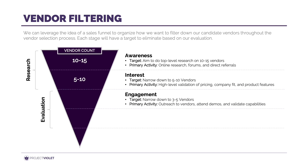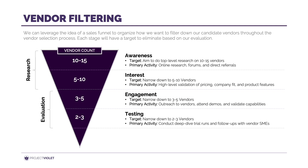From there, engage their sales teams, conduct the demos, and hopefully narrow down to 2 to 3 vendors where you can do some extensive testing in their trial run systems and then make your selection and purchase. These counts are just suggestions — you can always add or remove more based on how the process is going.